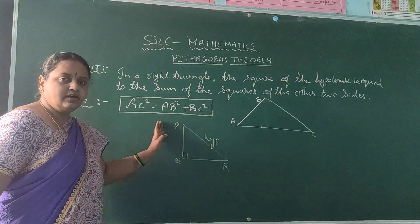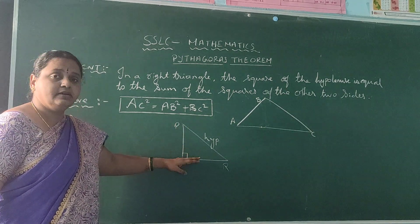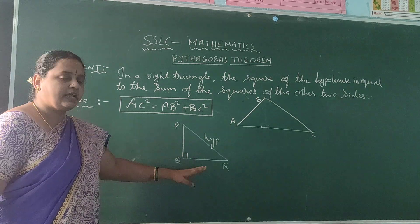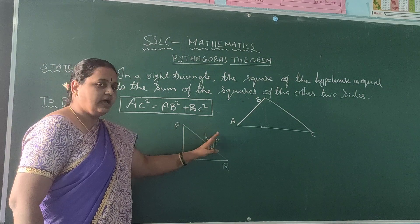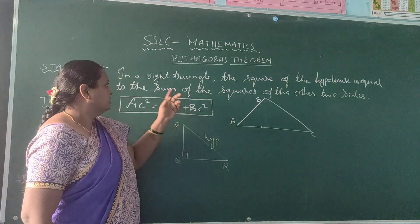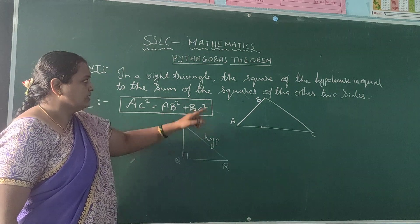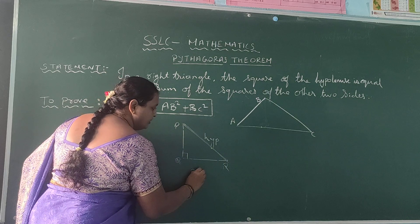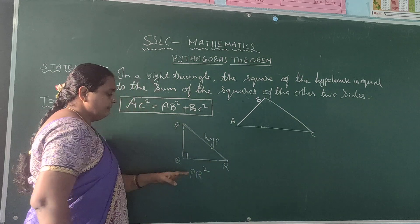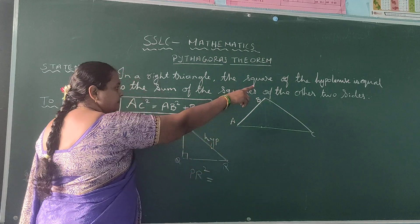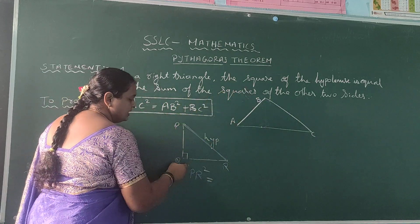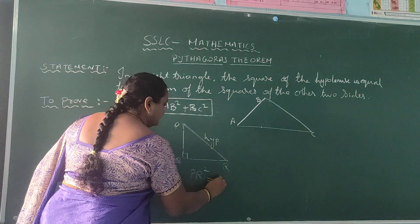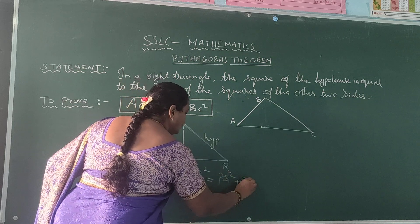Adjacent and opposite will be coming in the trigonometry chapter, but in this triangle chapter you only need to know the hypotenuse. In a right angle triangle, the square of the hypotenuse — PR square — is equal to the sum of the squares of the other two sides, PQ and QR. That is PQ square plus QR square.